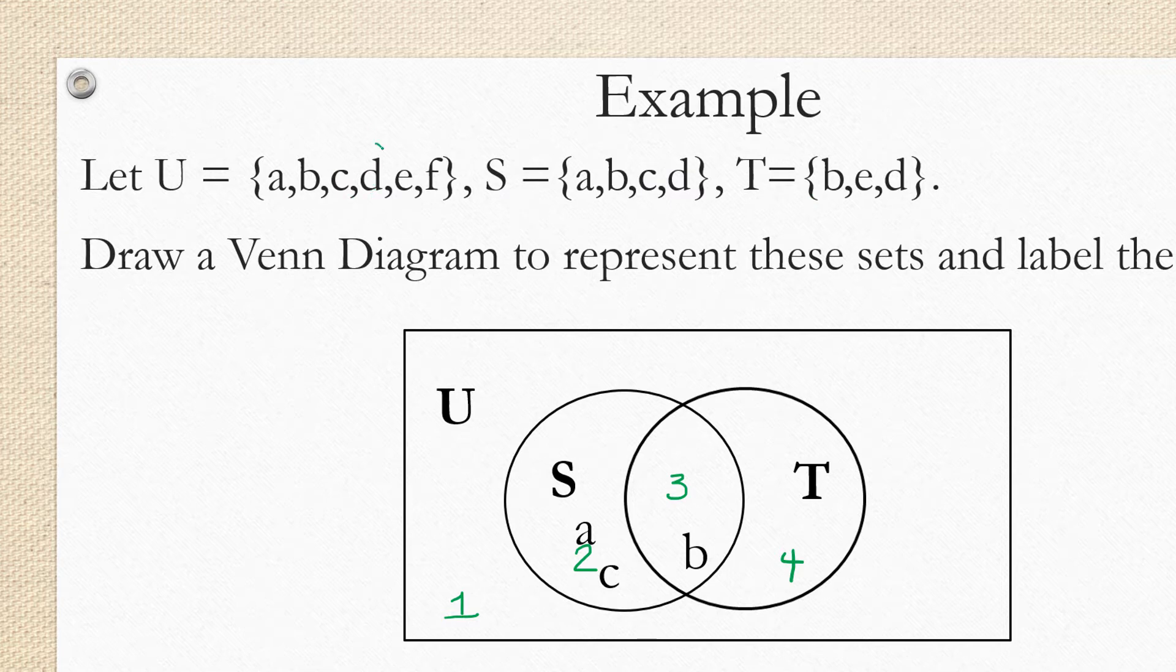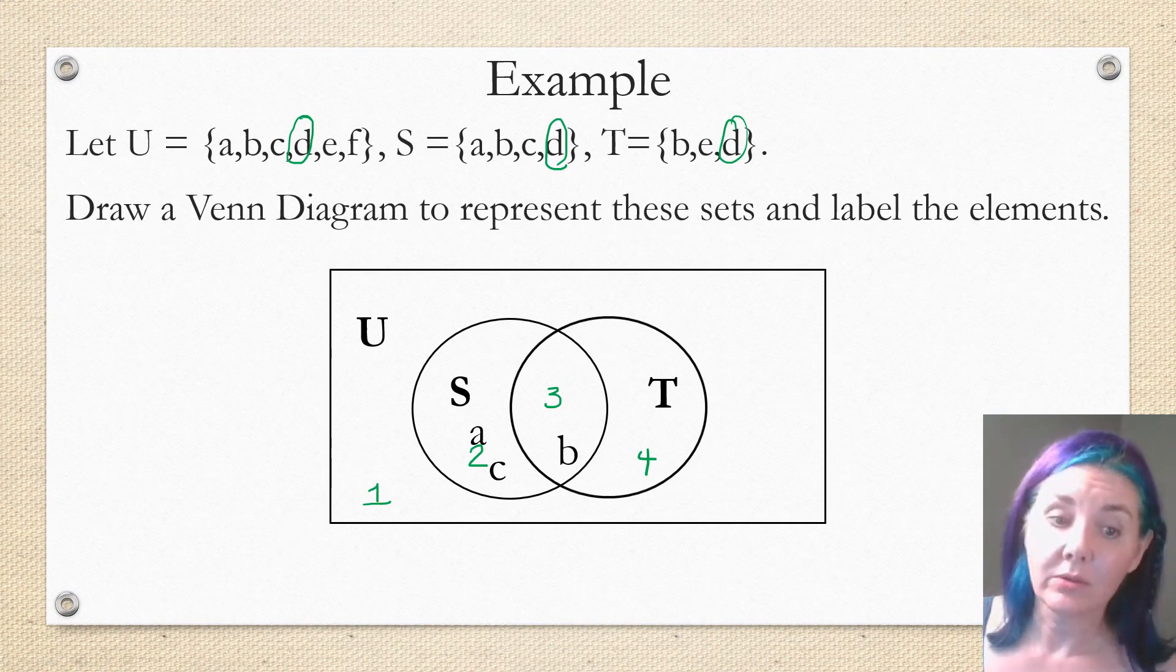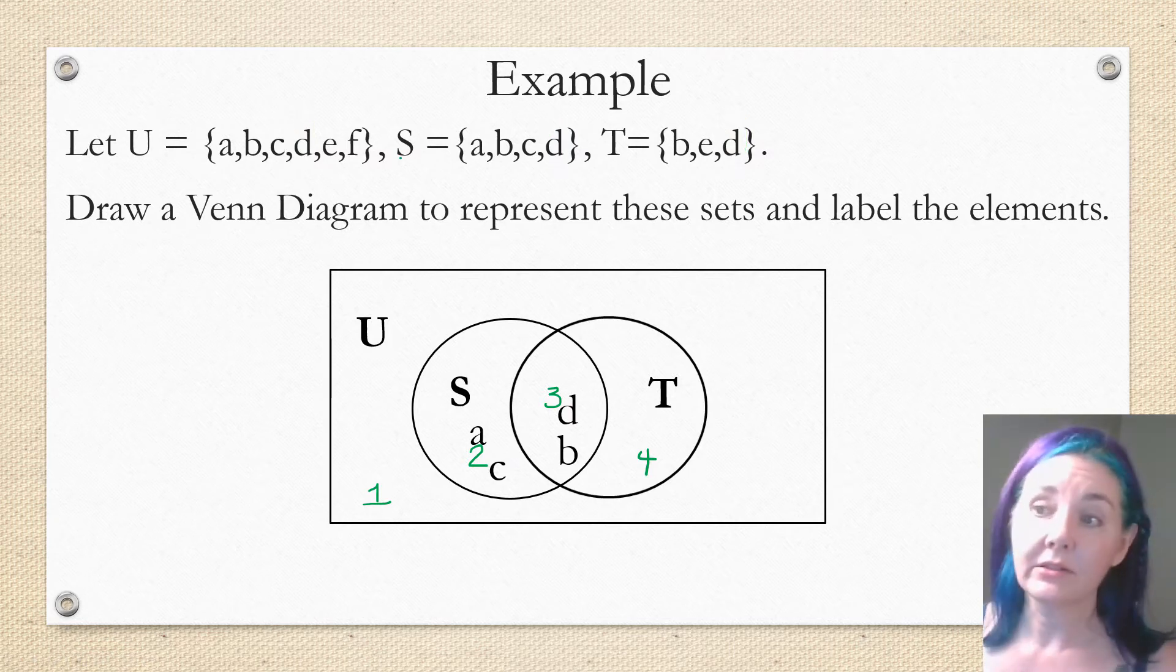All right, now we're going to look at the element D. D is in S and it's in T. So D has to go into region 3 because that's the only region that's in both S and T.